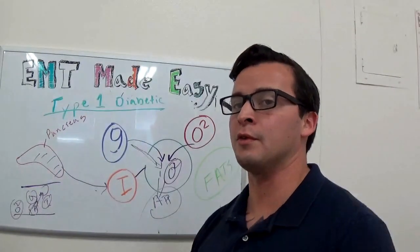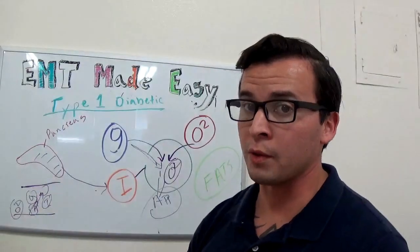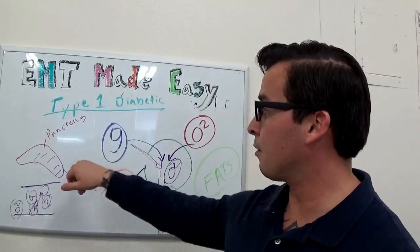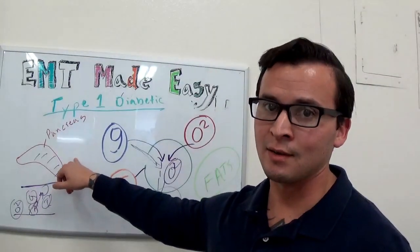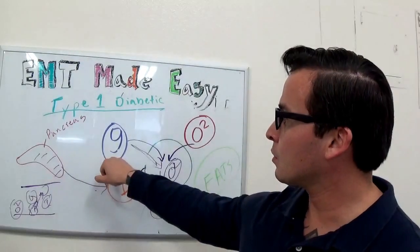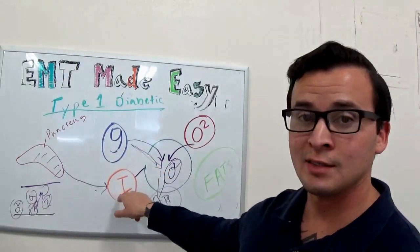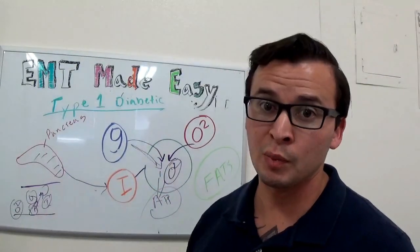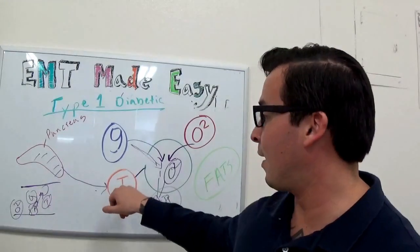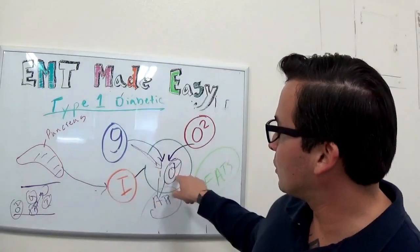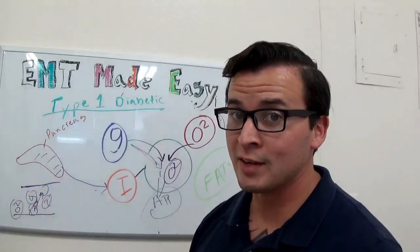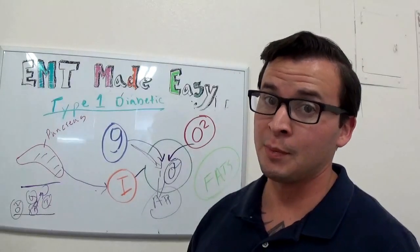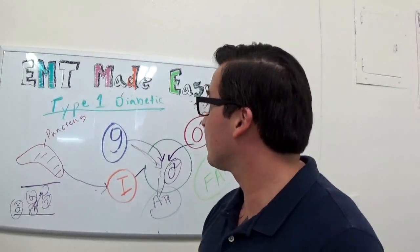Quick review: Type 1 diabetics are usually born with this condition. Their pancreas produces no insulin or very little. Insulin matters because it's the doorman that lets glucose into the cell. Without it, glucose can't get in, can't meet O2, and ATP can't be made. We especially need glucose and O2 to meet in the brain — your brain is who you are. That is Type 1 diabetes.